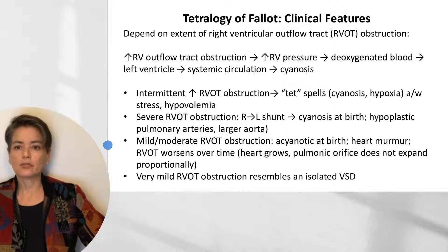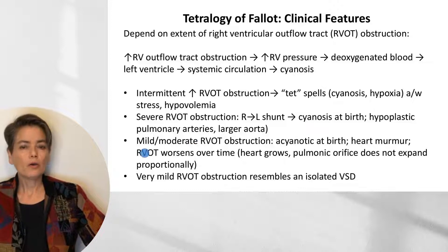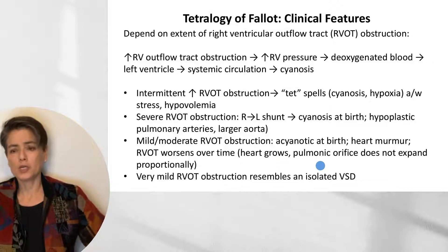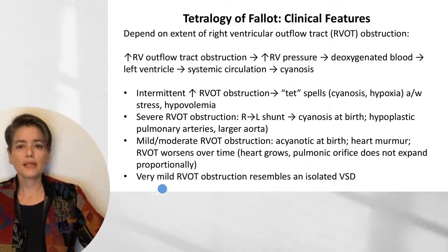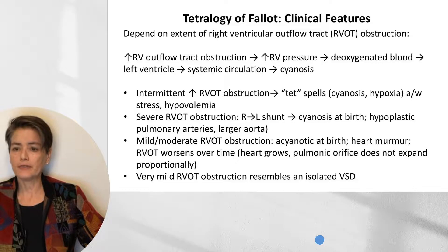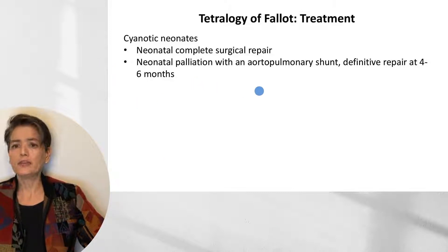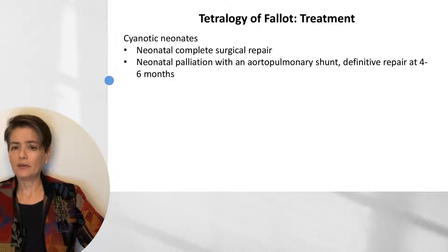With mild to moderate right ventricular outflow tract obstruction, the infant may be acyanotic at birth, but you will hear a heart murmur. Over time, the obstruction will worsen because as the heart grows, the pulmonic orifice does not grow proportionally, so the infant will eventually become cyanotic. With very mild obstruction, this can resemble an isolated ventricular septal defect. For cyanotic neonates, options include complete surgical repair in the neonatal period, or palliation with an aortopulmonary shunt with definitive repair delayed to four to six months, since cardiopulmonary bypass may affect the developing brain.